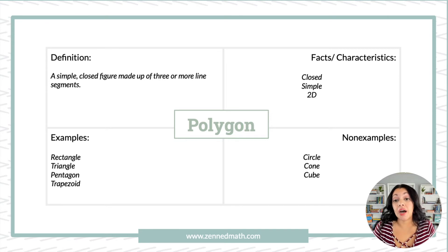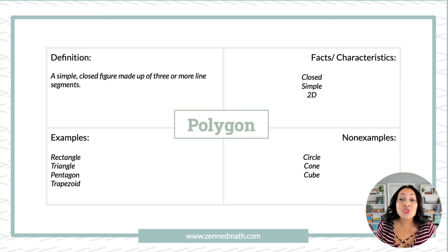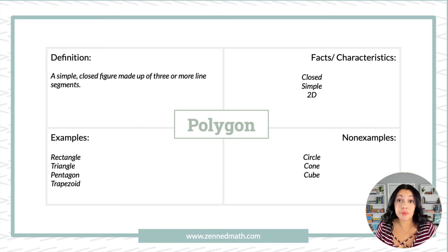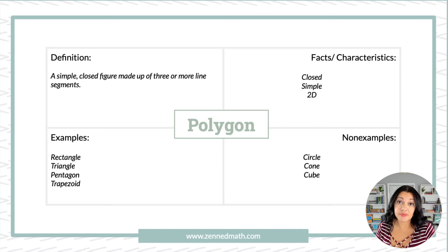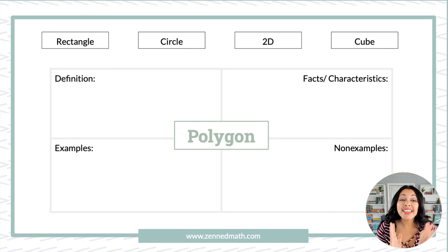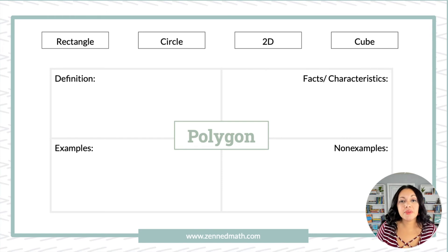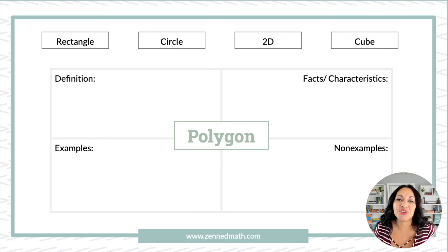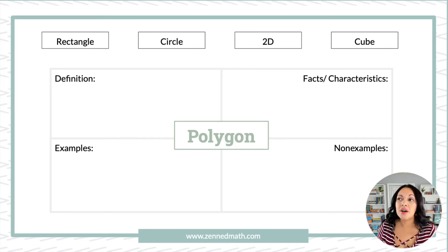You can also find misconceptions. So if I put a two-dimensional shape and you put a three-dimensional shape, we can talk about that and argue about who's correct and who has an error and why. Another cool idea is to give students information they're just placing in the appropriate spots — almost like a sort. If you do that, I would include words that don't even make sense to be in the graphic organizer, so students also practice identifying what doesn't belong.